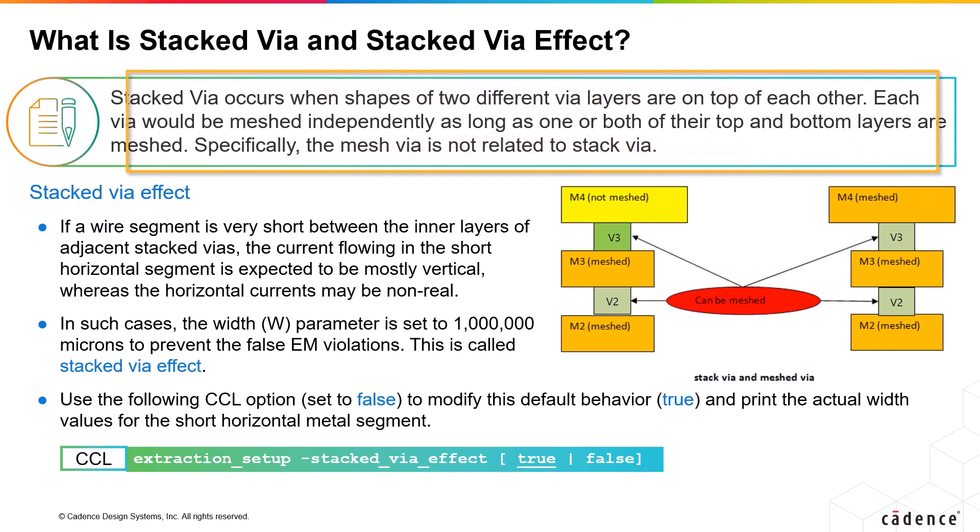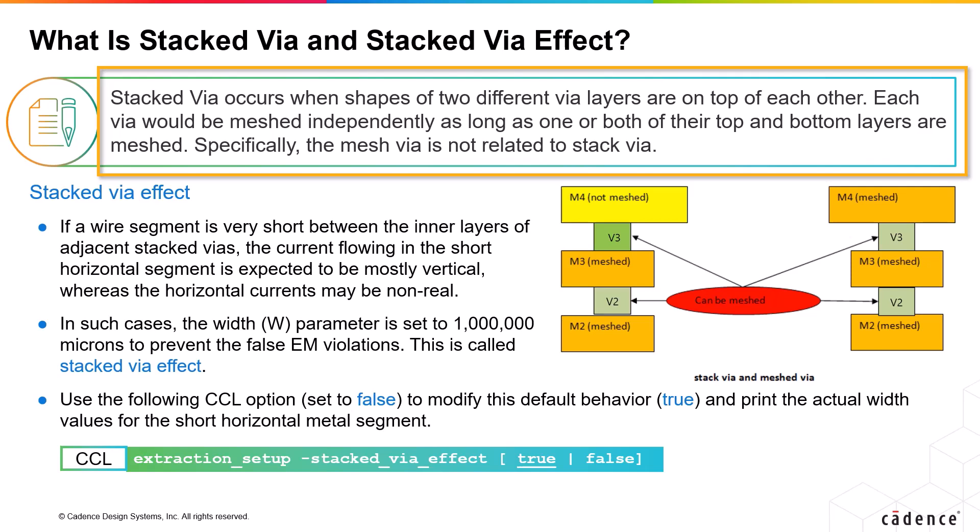In stacked via configurations, shapes of two different via layers are placed on top of each other. Each via would be meshed independently as long as one or both of their top and bottom layers are meshed. This is illustrated in the figure below.